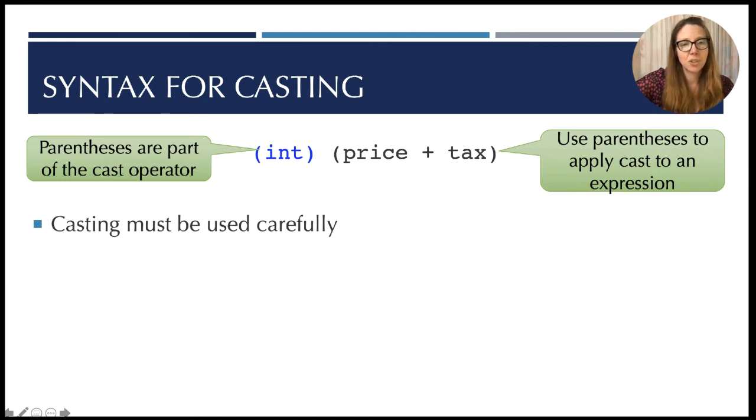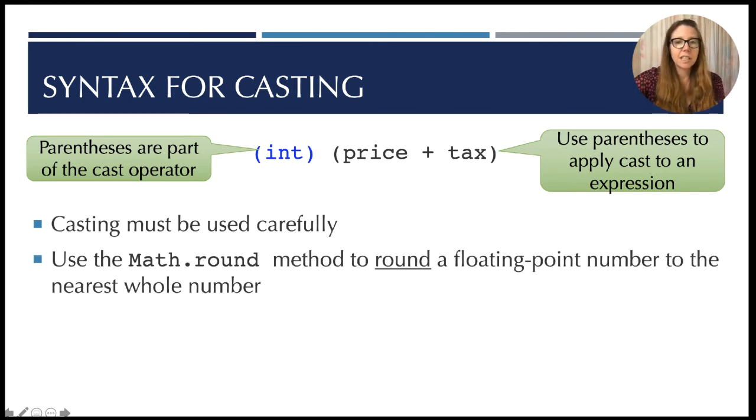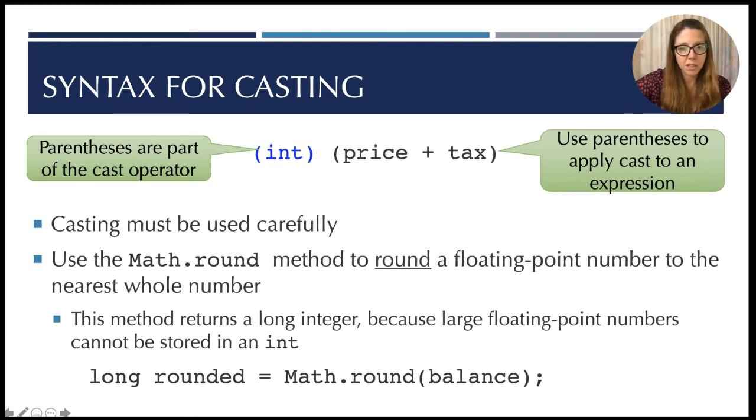Casting should be used carefully. So if you just want to round something, you should use Math.round to round a floating point number to the nearest whole number, otherwise you are losing that fractional part and that's important. This method, though - this mathematical function Math.round - returns a long integer. It's an integer type, but it is not an int, it is of type long. So large floating point numbers that are rounded can't be stored in int.